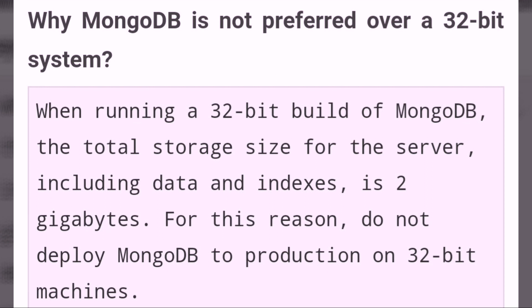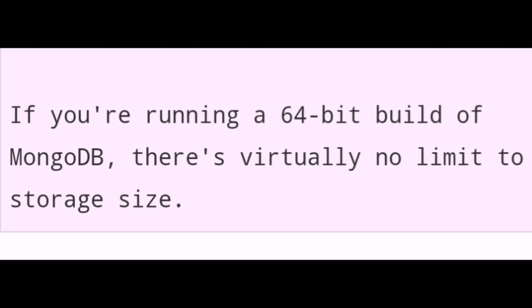Why is MongoDB not preferred over a 32-bit system? When running a 32-bit build of MongoDB, the total storage size for the server including data and indexes is 2 gigabytes. For this reason, do not deploy MongoDB to production on 32-bit machines. If you are running a 64-bit build of MongoDB, there is virtually no limit to storage size.